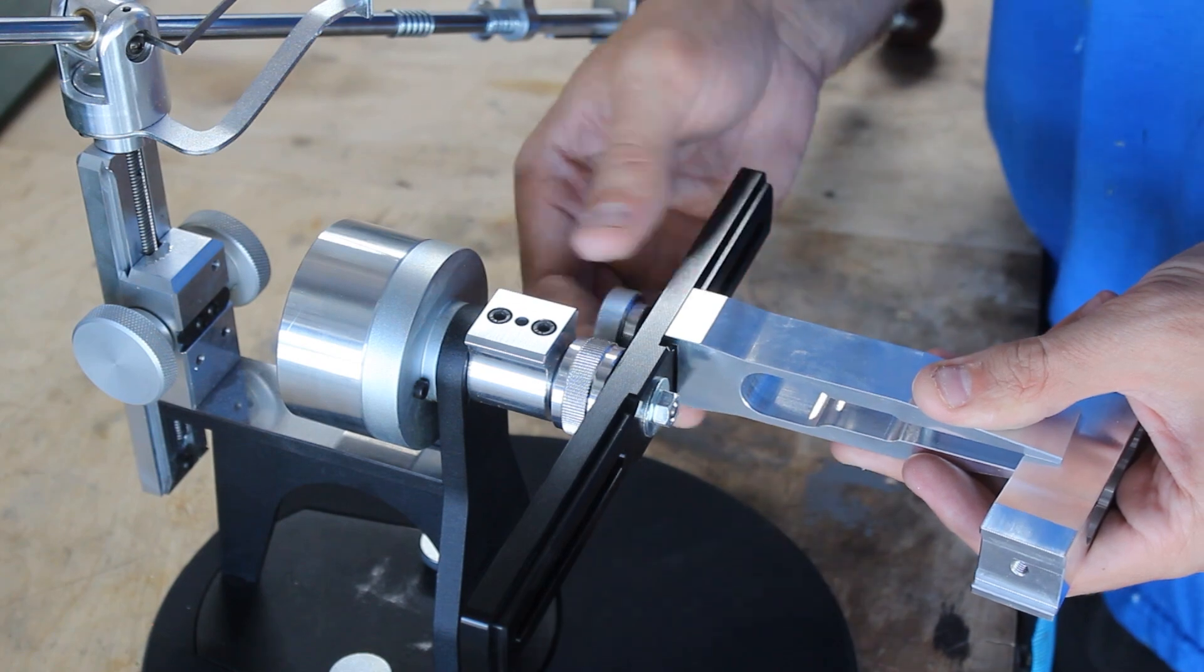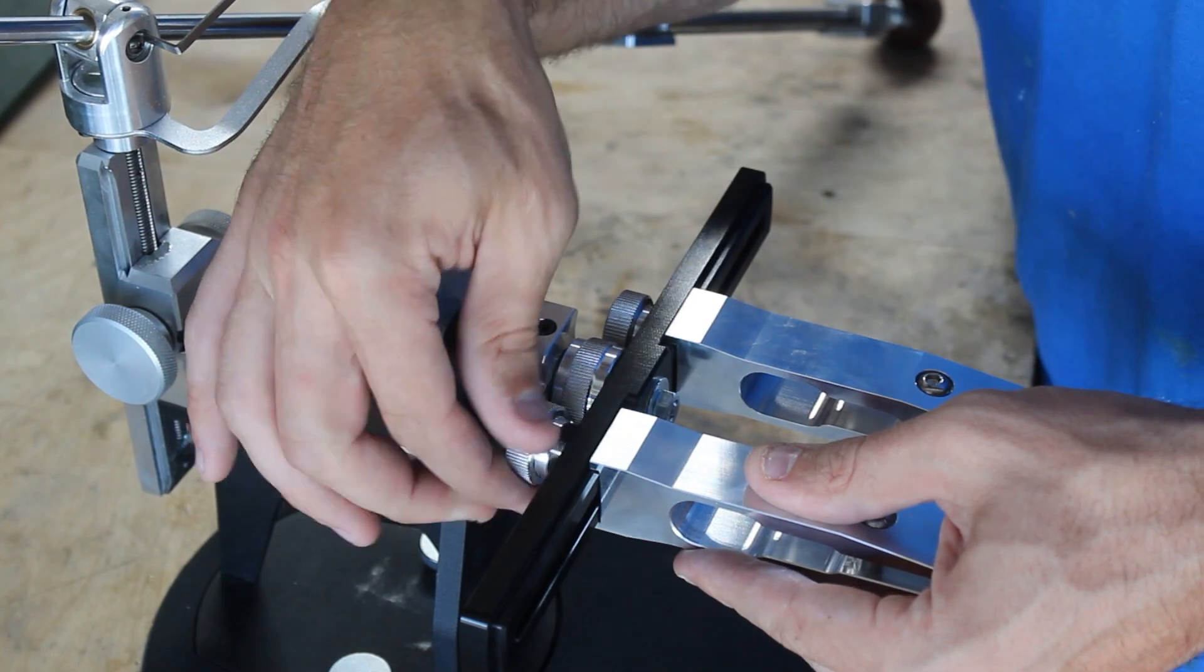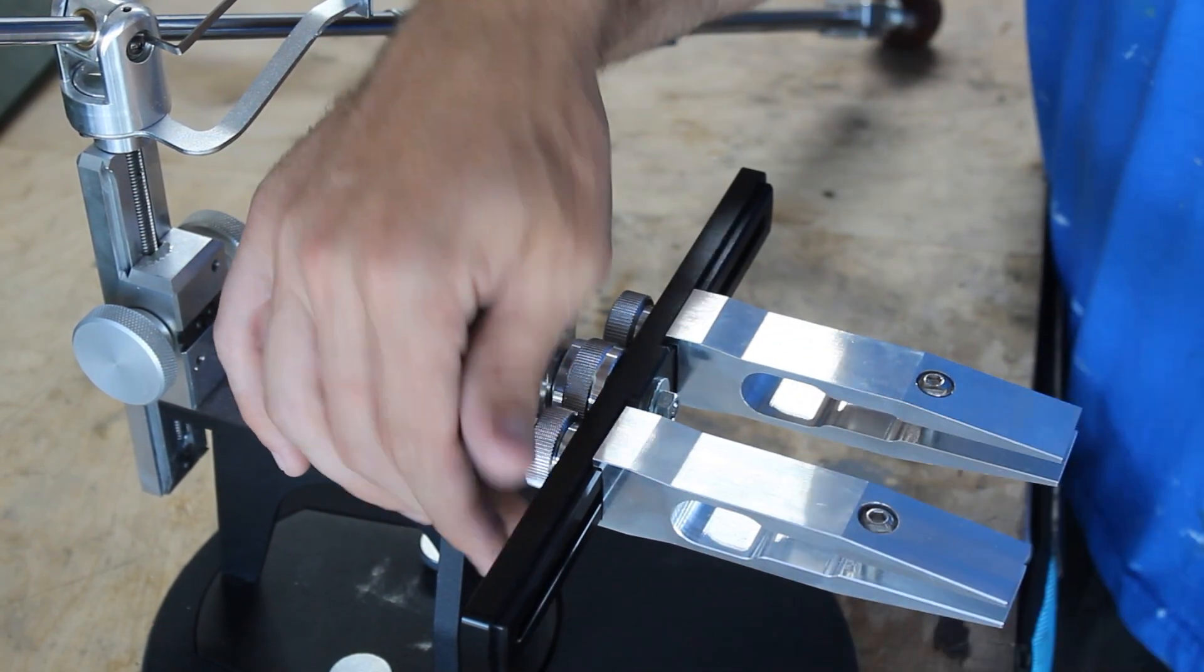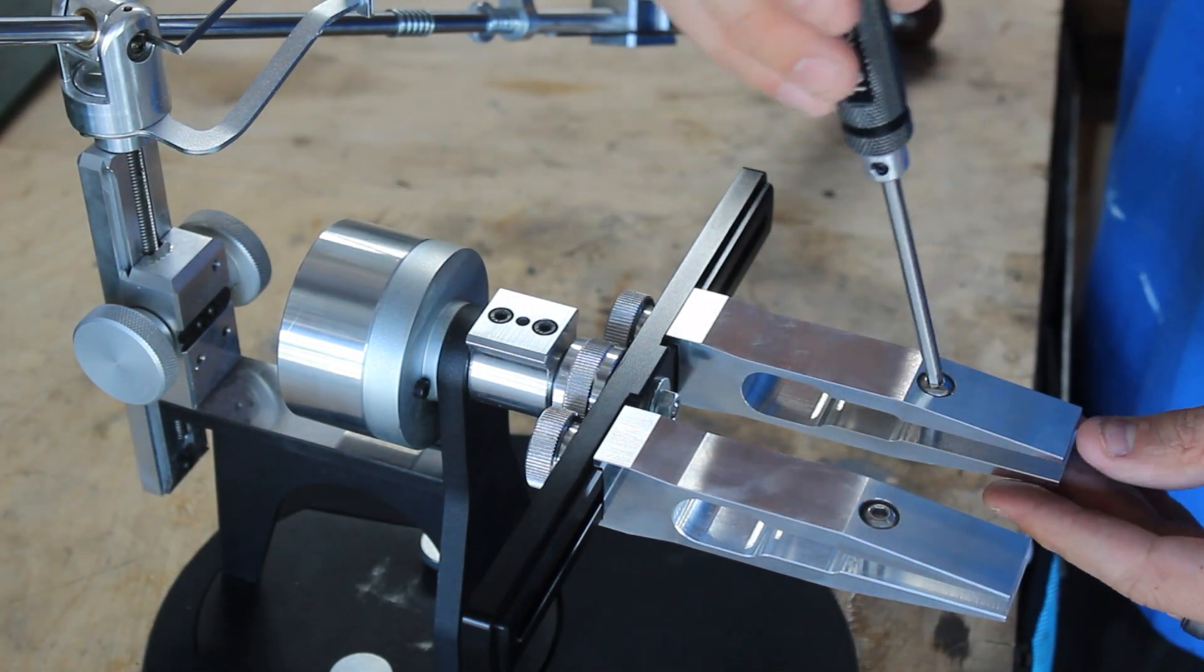So now I'm going to screw on the clamps where you actually clamp the blade in. And obviously this assembly was all pretty easy and straightforward. They also included a dedicated screwdriver for tightening these clamps in place, which was obviously important.